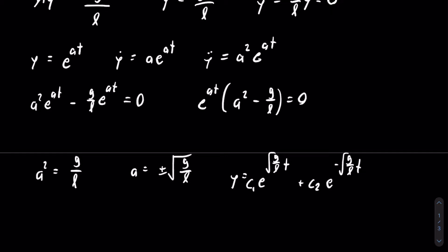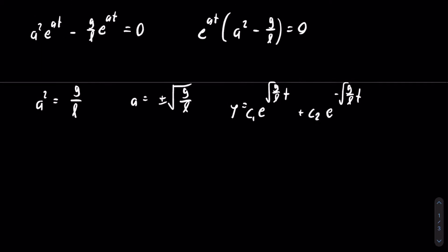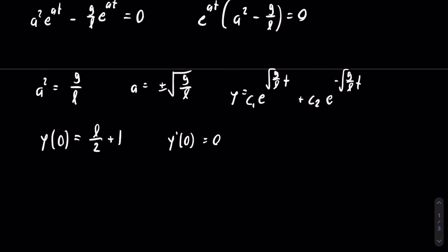Let's make this problem more interesting by adding initial conditions. The rope has to be at least halfway off the table to slide off, so let's say y(0), the position of the bottom portion, equals l/2 plus 1, which is greater than half the length. We can then set the initial velocity of that point to be zero. We need two initial conditions because there are two constants to solve for. Using the first initial condition, we substitute t equals 0, making all exponentials go to 1, leaving C1 plus C2 equals l/2 plus 1.